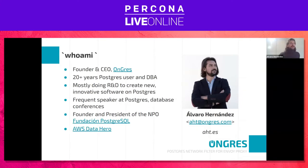I'm Alvaro, founder of Ongres. This company name means 'on Postgres.' We do R&D on Postgres and provide professional services. I'm frequently found at Postgres conferences, other database conferences, or even Java programming conferences sometimes, and I like to work in the Postgres community.